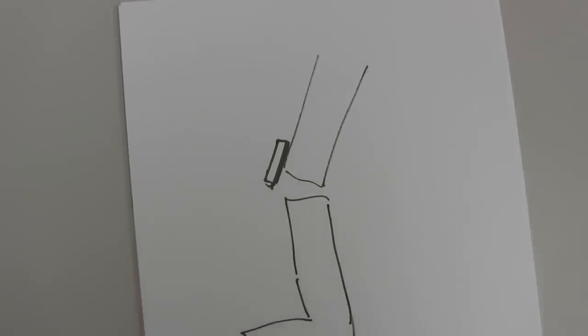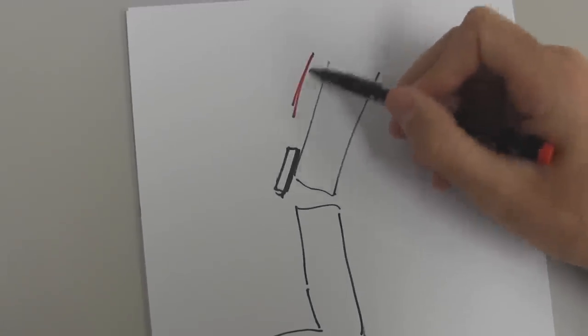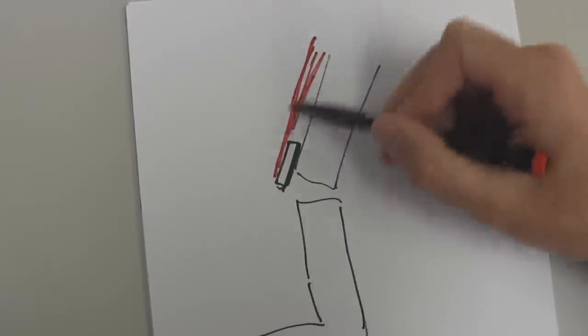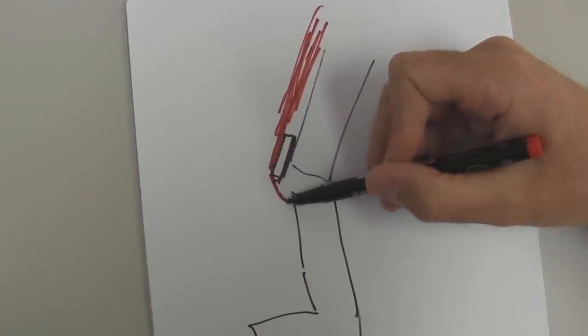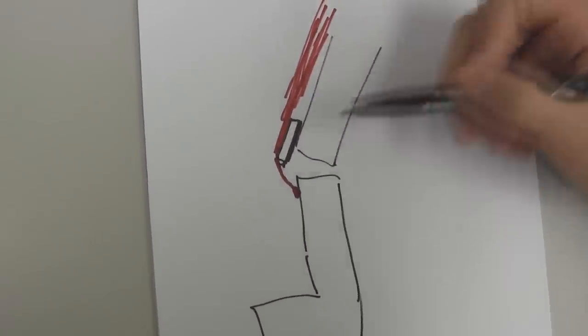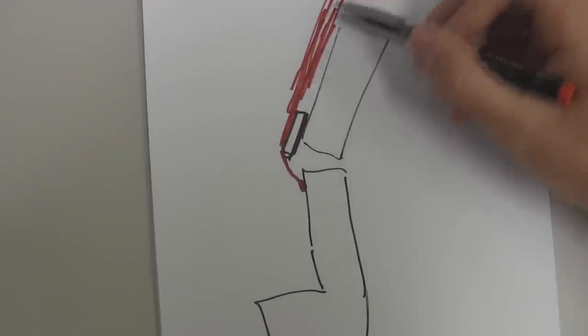The other thing it does is it adds to leverage of the quadricep muscles. So if I draw muscles onto this picture here, it looks like this. So the quadriceps coming down here at the front of the thigh link through the patella tendon and then attach at the tibial tuberosity just below the knee. So this is four very large quadricep muscles.